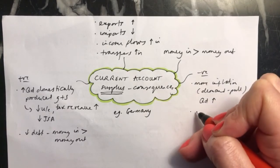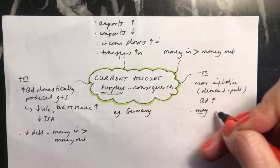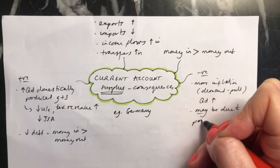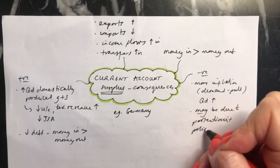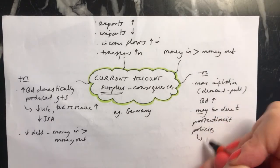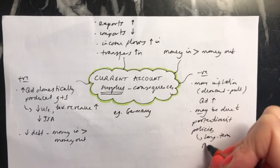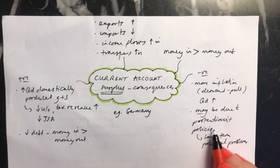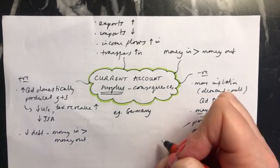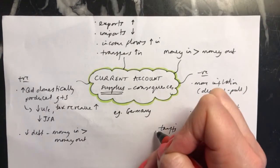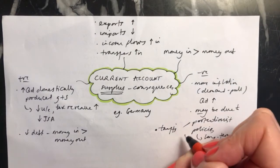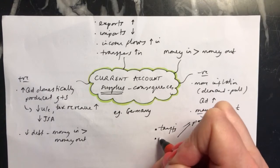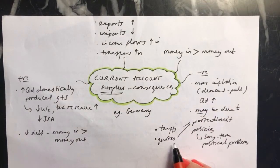The second thing is that this current account surplus may be due to protectionist policies. What this means is that you've put things in place to limit the amount of imports coming in. For example, you may be putting tariffs on imports. That means it's like a tax being placed on imports to make them more expensive and less attractive to the consumer. Another thing, they might be putting quotas in place. This limits the quantity of things being imported and usually that means there are just fewer available to buy. It might also increase the price of those. All of these things would decrease imports.